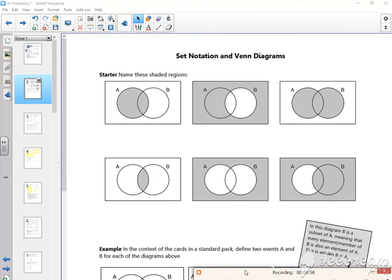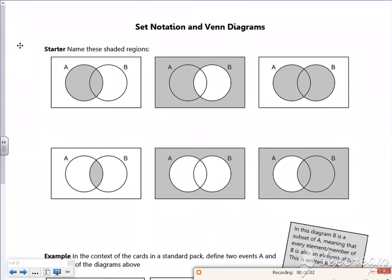Hopefully you're happy with Venn diagrams, but if not, if you look, this is shading all of the A part. So this is the probability of A. If you look at this, this shades everything.